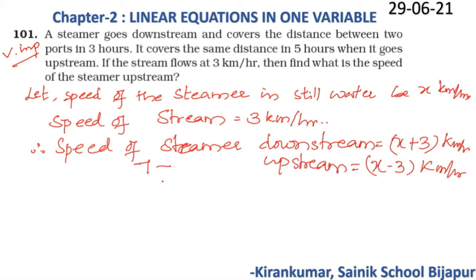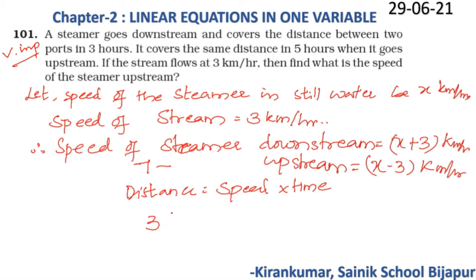As per the question, the distance covered in 3 hours downstream equals the distance covered in 5 hours upstream. Since distance = speed × time, we get: 3(x + 3) = 5(x − 3). Simplify this equation to find x, the speed of the steamer in still water.